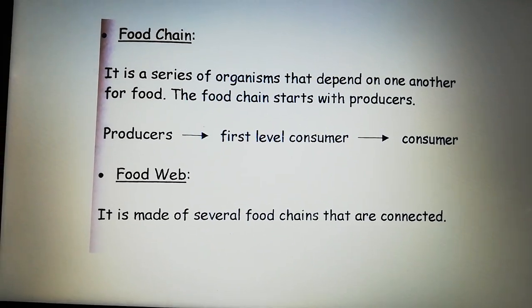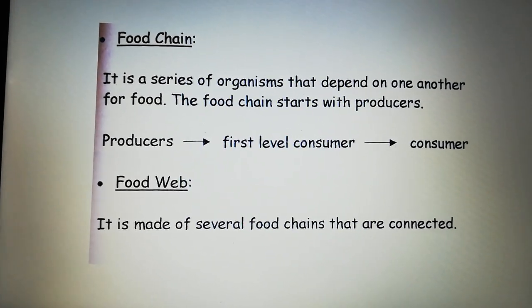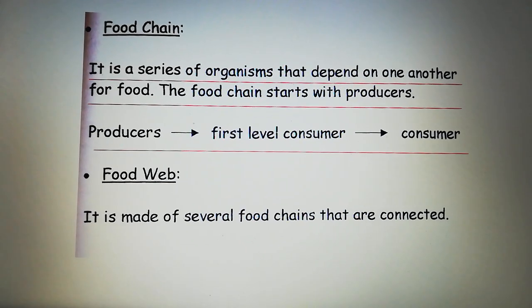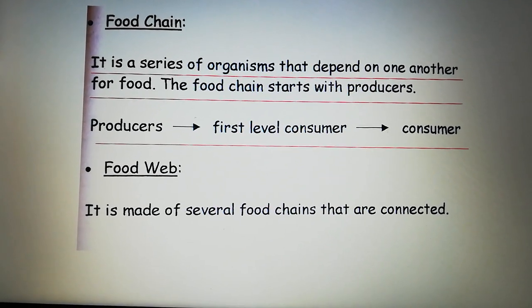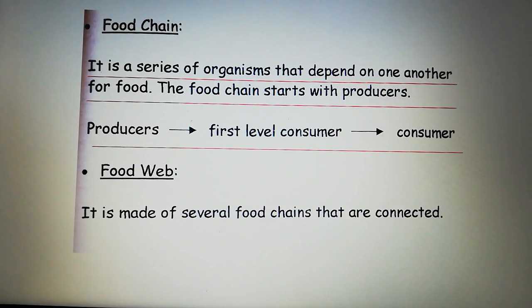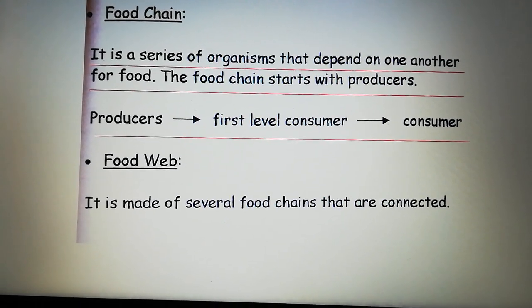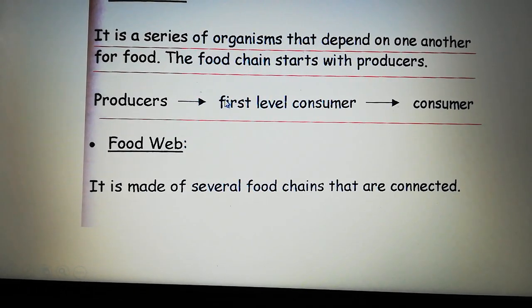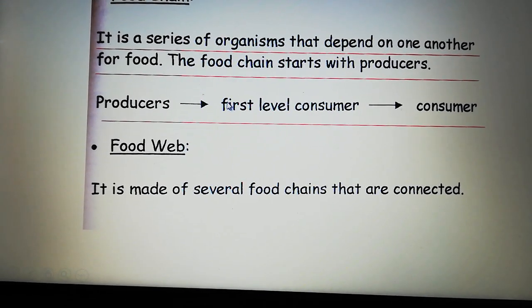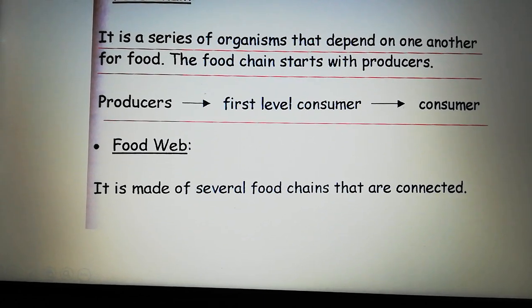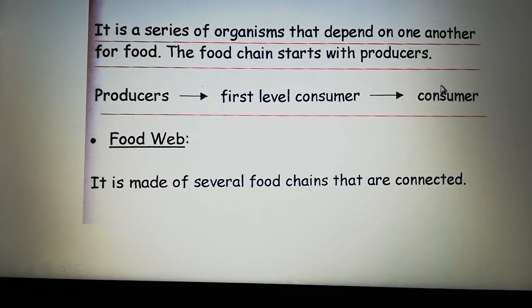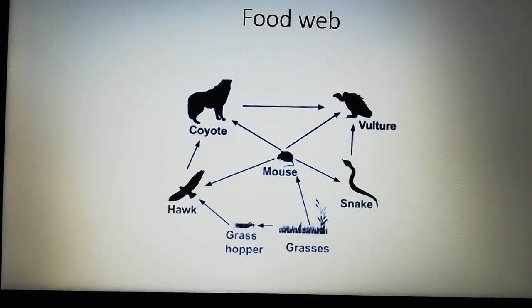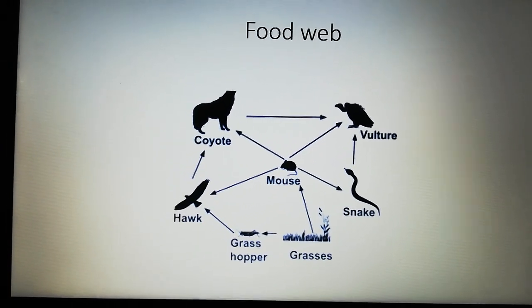Page 22 in your books. A food chain is a series of organisms that depend on each other for food. The food chain always starts with producers, which are the plants. And then you have the first level consumer, which is always a herbivore, because they eat plants. And then you have the next consumer.